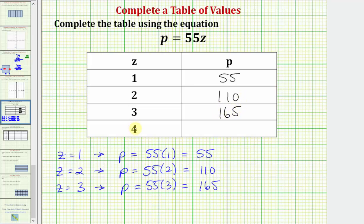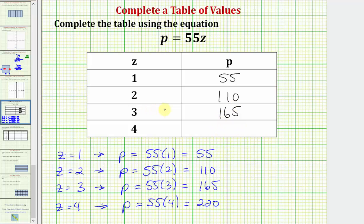And the last value of z is four. So when z equals four, again using our equation we would have p equals 55 times four, which is equal to 220. So when z equals four, p equals 220. We now have our completed table using the equation p equals 55z.